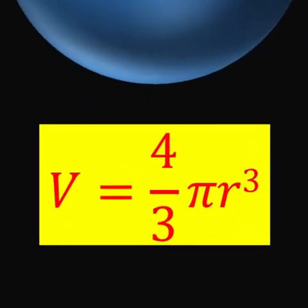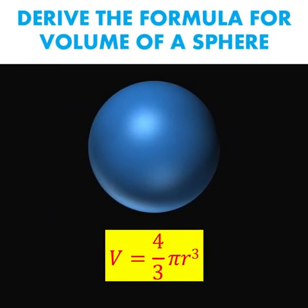This is a sphere and this is the formula to compute the volume of this sphere. Do you know how to derive this formula? In this lesson, I'm going to show you how to derive this formula V equals 4 over 3 pi r cubed.